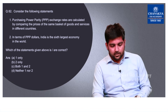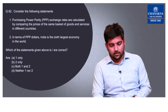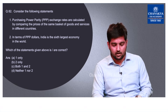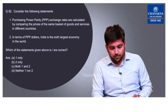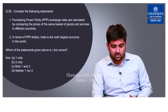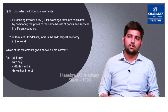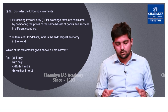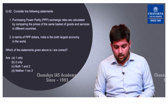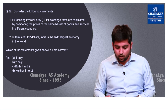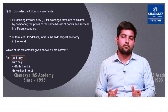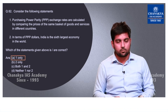Question number 82 is related to Purchasing Power Parity (PPP). Statement 1 — that PPP exchange rates are calculated by comparing the prices of the same basket of goods and services in different countries — is absolutely correct. Statement 2 — that in terms of PPP, India is the sixth largest economy — is incorrect, because India is the third largest economy in terms of PPP. So the correct option is A — 1 only.